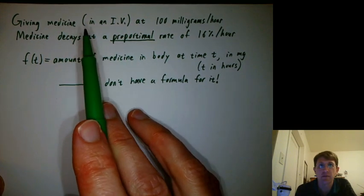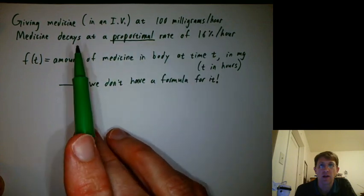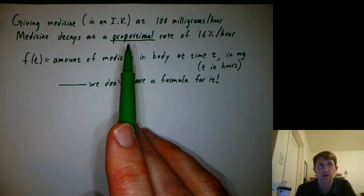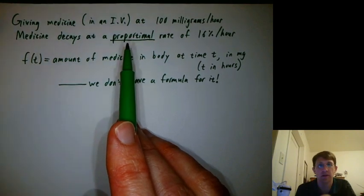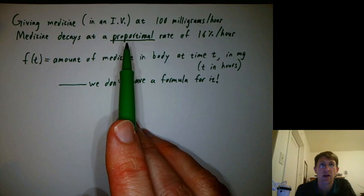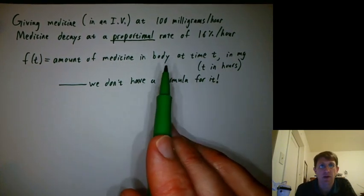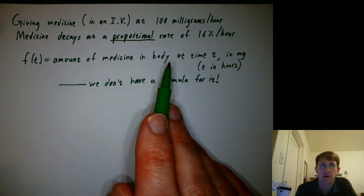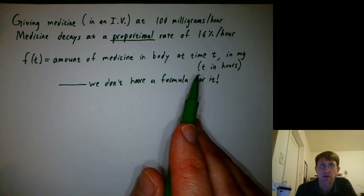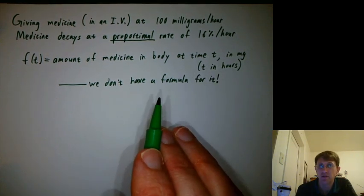Let's say someone's getting medicine in an intravenous drip at 100 milligrams per hour, and once the medicine's in their body, each little bit of it decays at a proportional rate of 16% per hour. That's reasonable for some medicines. We're going to say f(t) is the amount of medicine in the body at time t in milligrams, where t is measured in hours, but here's the thing.